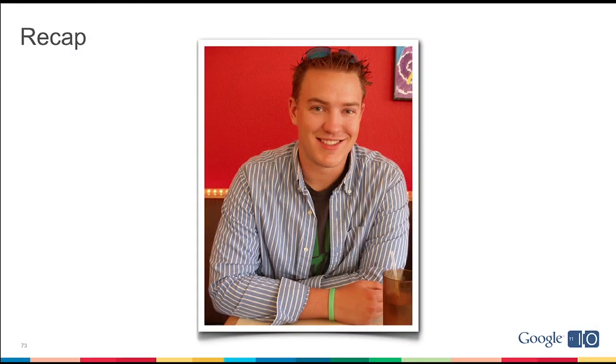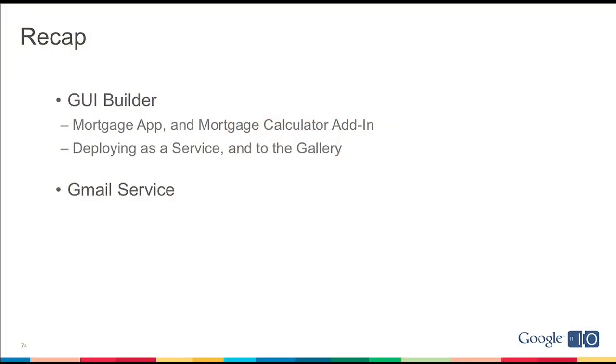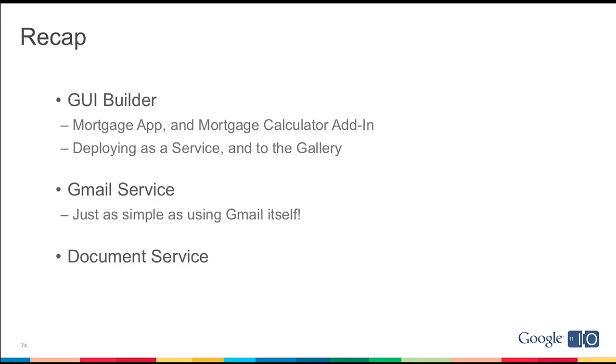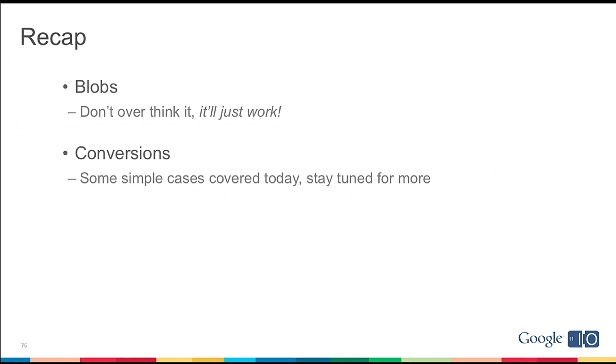So let me recap. Bob is really happy because not only is he helping people, he's not wasting any time doing it. Today we built Bob's Mortgage Calculator using the brand new GUI Builder, which is available today. We were able to build a full app as well as a spreadsheet calculator add-in, and we deployed it as a service into the gallery. We also showed you the new Gmail service, launching in the next day or two, which is just as simple as using Gmail itself. Finally, we showed you the document service, which finally has an API for scripting Google Documents. We also showed you blobs — don't overthink it, it will just work. Take objects, attachments from Sites, attachments from Gmail, post them directly to your doc list without worrying about the type. And conversions — simple cases like Google Document to PDF were covered today; stay tuned for more interesting ones. James showed us AndyApp and some expert tips on how to use Google Apps Script to do more than just boring data entry.